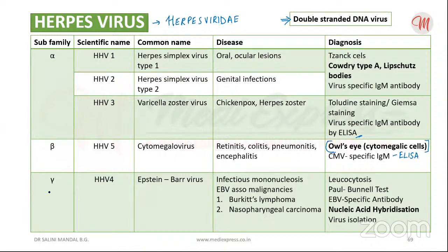Under the gamma subfamily, human herpesvirus 4 is the Epstein-Barr virus. Epstein-Barr virus has an affinity for lymphoid tissues and infects B lymphocytes. The infected B lymphocytes are transformed so that they multiply continuously and contain many Epstein-Barr virus genomes. It causes infectious mononucleosis and associated malignancies including Burkitt's lymphoma — malignant neoplasms of B lymphocytes occurring in Africa and New Guinea.